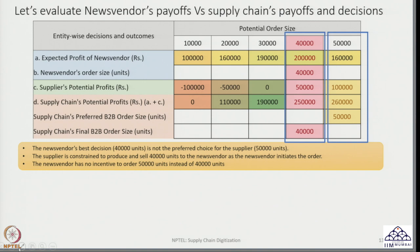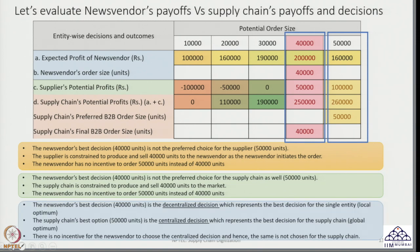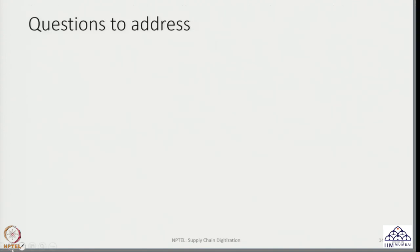The news vendor's decision is not the best for the entire supply chain, which is forced to deal with an order size of 40,000 units. The news vendor's best decision is a decentralized decision — best for that entity but it impacts the entire supply chain. The supply chain's best decision would be a centralized one, but it is not taken up by the news vendor. This leads us to a few questions.